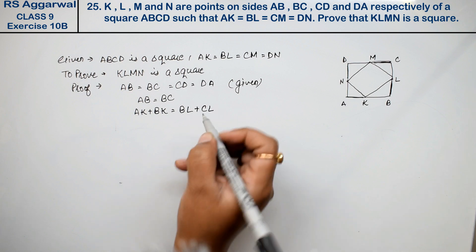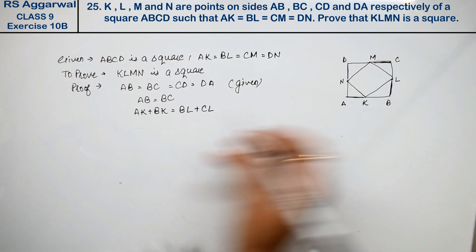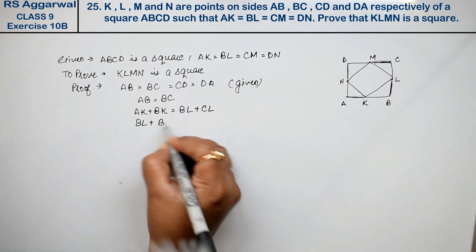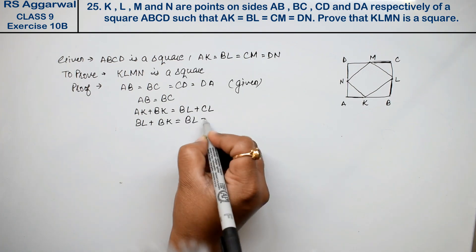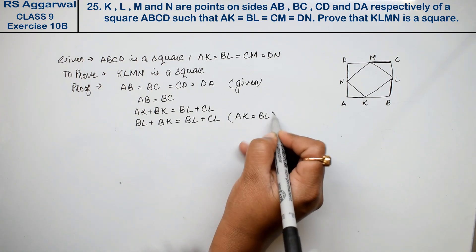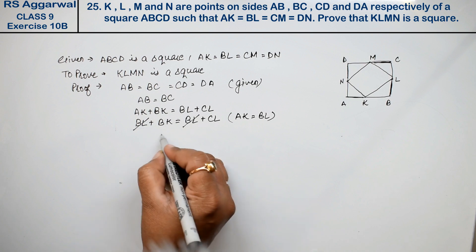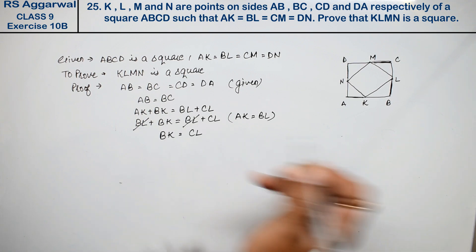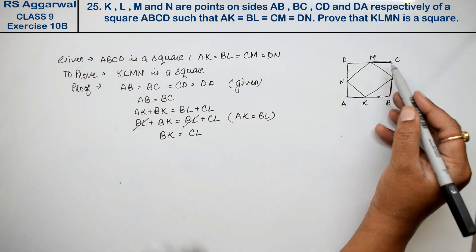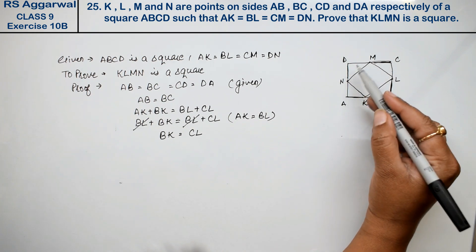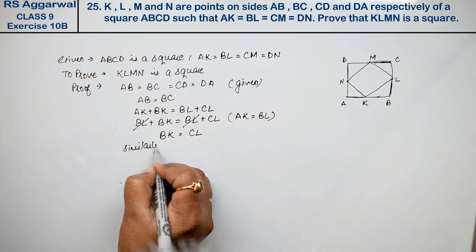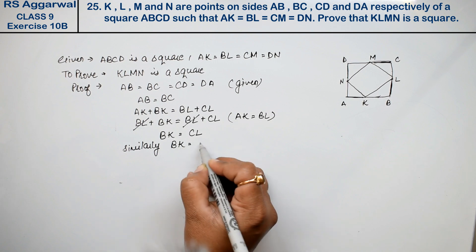Now, if we know AK equals BL, then AK plus BK equals BL plus CL. Since AK equals BL, we can cancel BL from both sides, so BK equals CL. Similarly, BK equals CL.